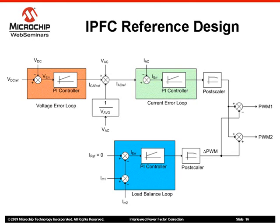The voltage error controller makes sure that the output voltage is not affected by load variations. Its inputs are the DC output voltage and the corresponding reference, and its output is the current compensator reference. The current error controller regulates the phase and shape of the input current, which is the sum of both inductor currents measured using a shunt resistor. The output of this controller is a pulse-width modulation, or PWM, duty cycle applied to the power MOSFETs.